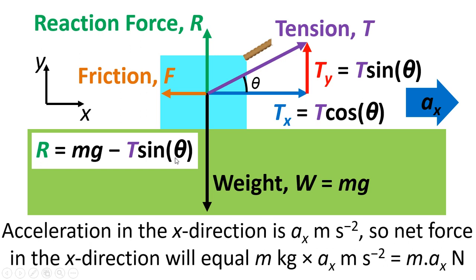The next thing I want to do is to look at the x-direction. Now we know that the object is accelerating at ax meters per second squared. So the net force will equal m times ax. So m ax newtons. Because the object isn't at rest this time. So the net force has to equal m times ax.